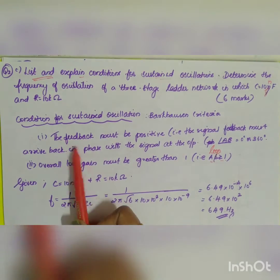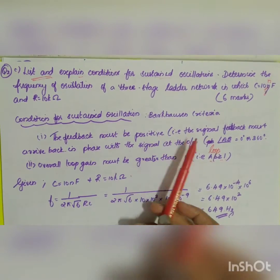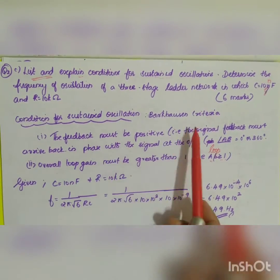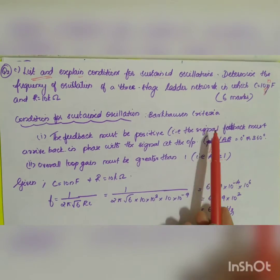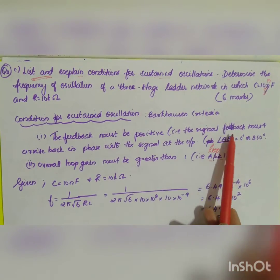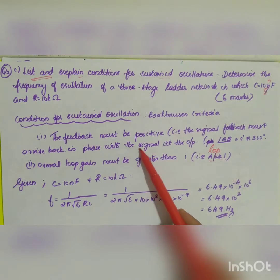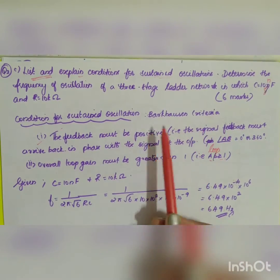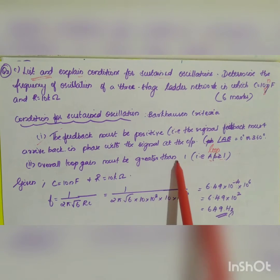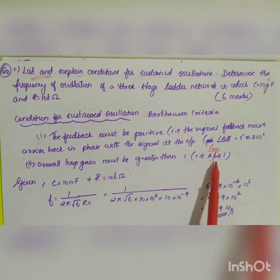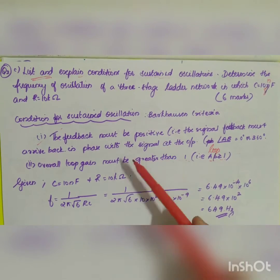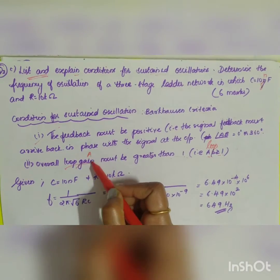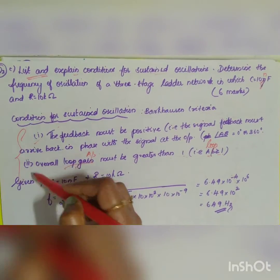The feedback must be positive - this is the first condition, meaning the signal feedback must arrive back in phase with the signal at the tip. Second condition: overall loop gain must be greater than 1, that is A times beta should be greater than 1. These are the two conditions you can explain.